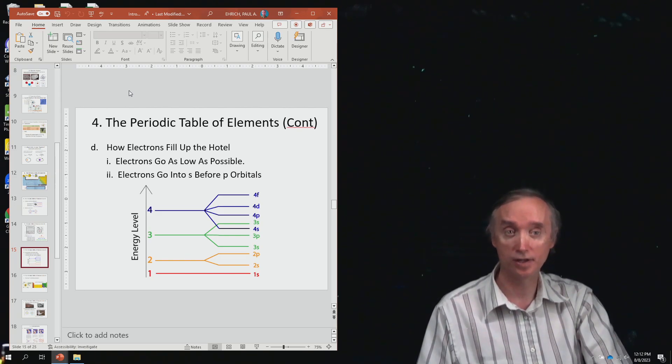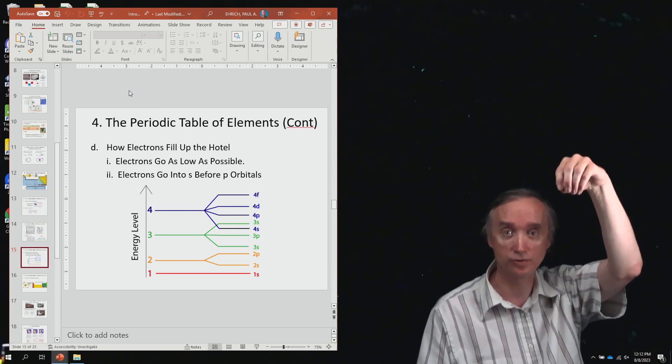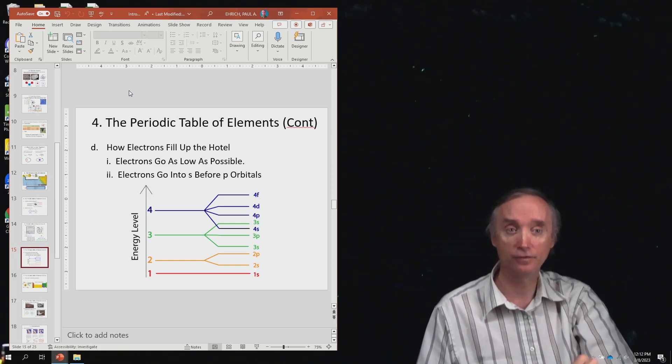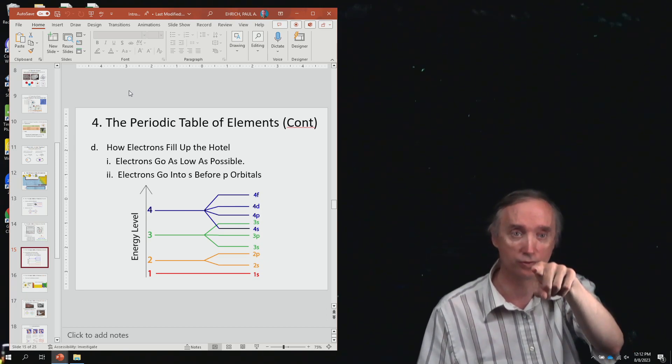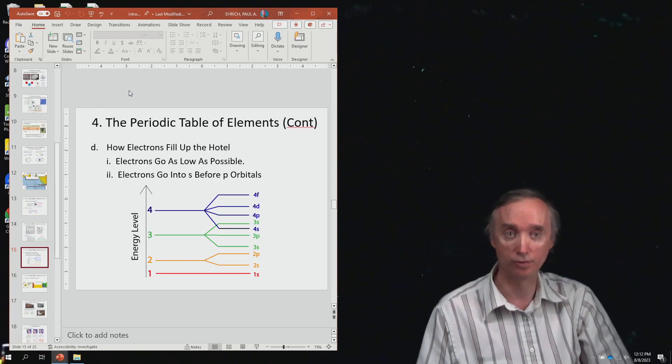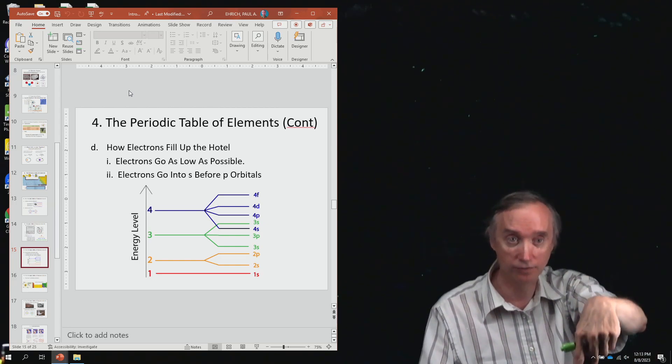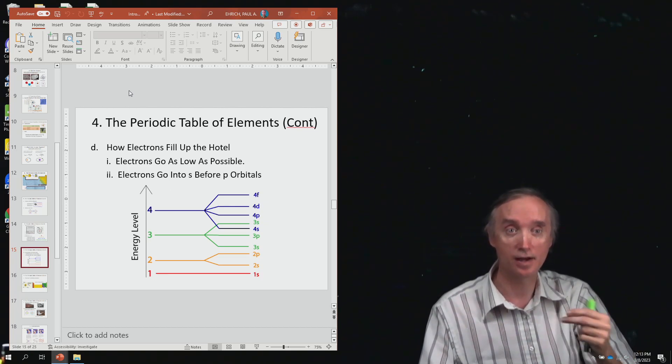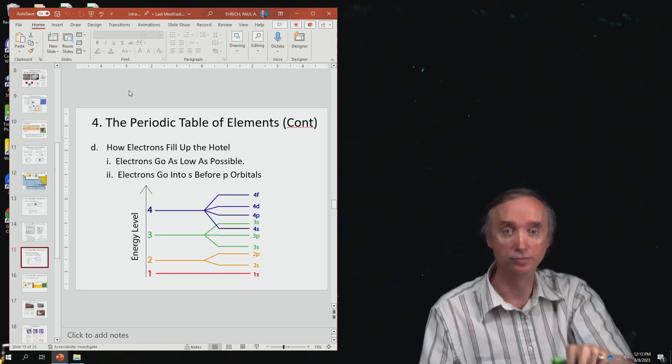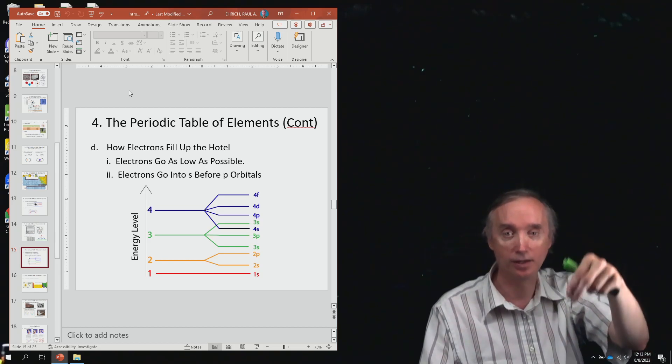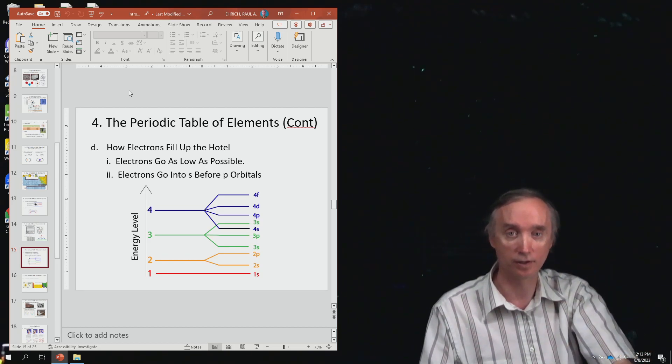Then how do you fill up the atomic hotel? Two rules. So one, you're going to drop the electrons in. They want to go as low as possible. Then if they have to go to the next level up, then we're going to go to rule number two, which is going to say that they'd rather go into the s orbital, which can hold two electrons. They'd rather go into that one before they go into the p orbital, which can hold six. And so by using these two rules, we can explain that if you drop one electron in there, it goes to the ground floor, the 1s orbital. That's hydrogen. We drop two electrons in. They both go into the 1s orbital. That's helium. So I could ask you if we drop so many electrons in there, which orbitals are they going to go into? So a question like that.